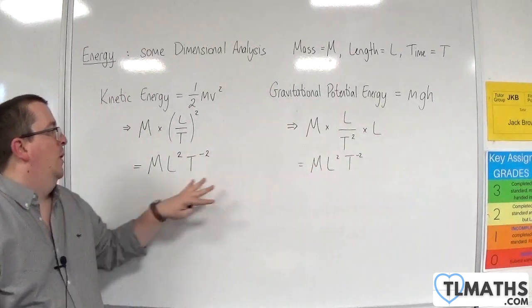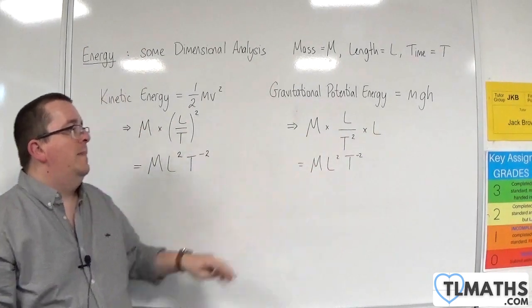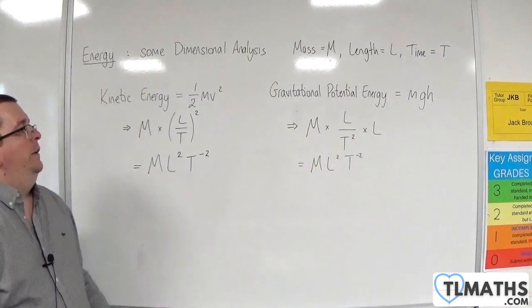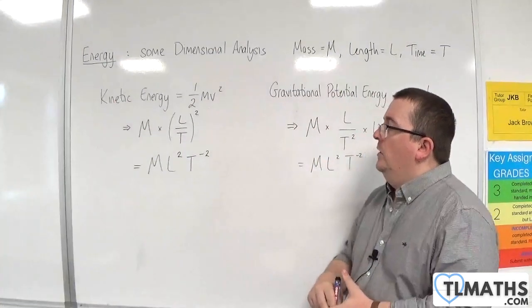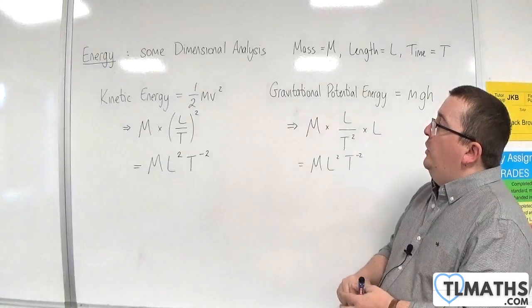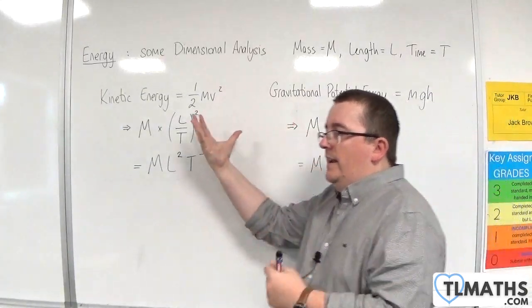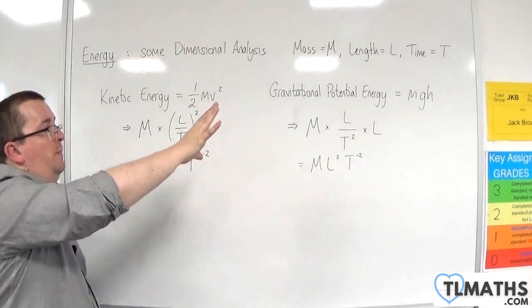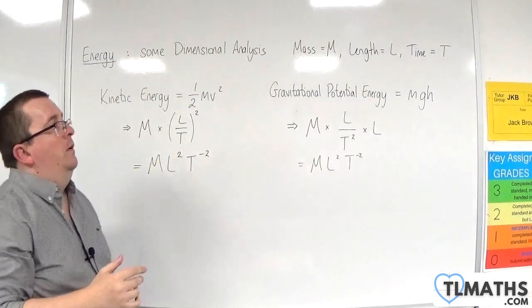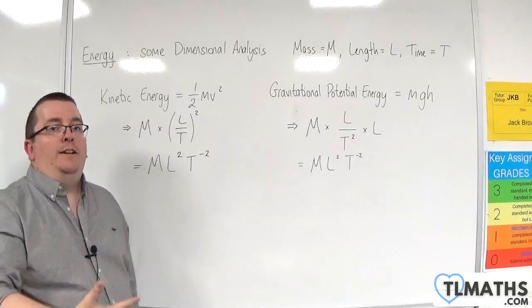And so you can see that they both are dimensionally consistent. And so they must both have the same units. And that's how you can show that kinetic energy and gravitational potential energy, these two formulas, both give you energy.